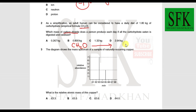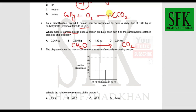From combustion theory, when a carbohydrate burns in oxygen it produces carbon dioxide with the same number of moles as the number of carbon atoms present. Since the value of x in this carbohydrate is one, one mole of this carbohydrate produces one mole of carbon dioxide.